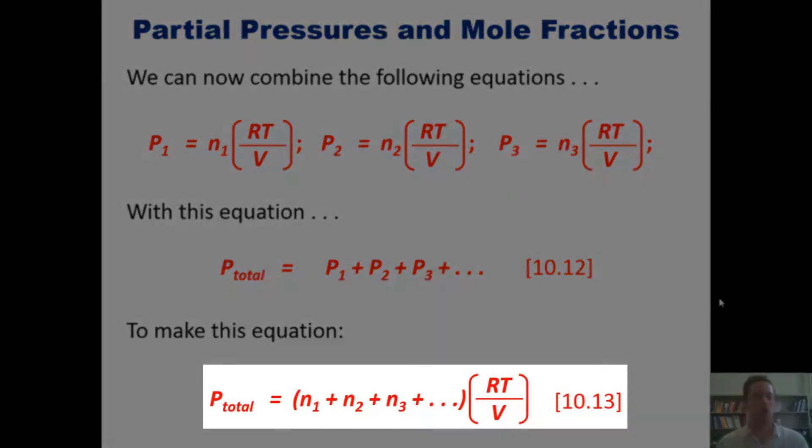If I want to calculate the total pressure of the system, all I have to do is take the individual number of moles of however many gases are inside that system and multiply them by RT divided by V.